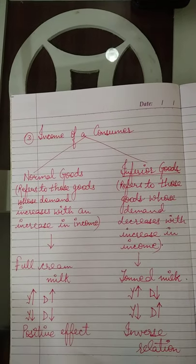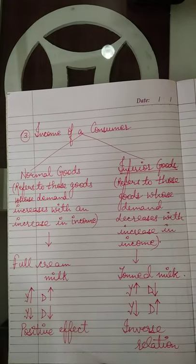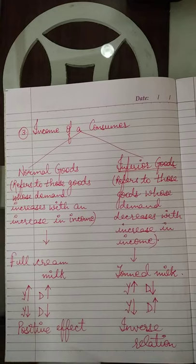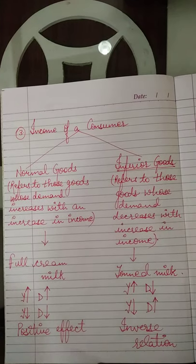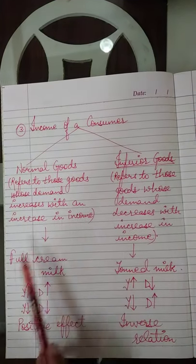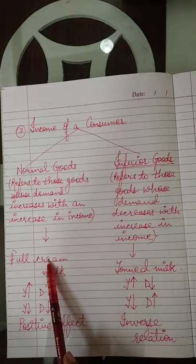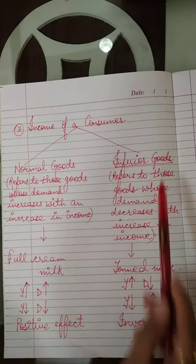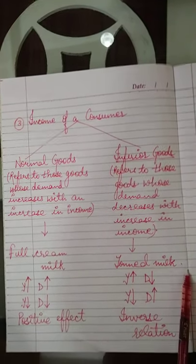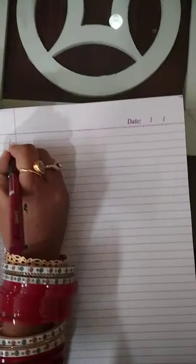मजबूरी में inferior goods लेने पड़ेंगे। Example: normal goods का — full cream milk; and inferior goods का — toned milk.